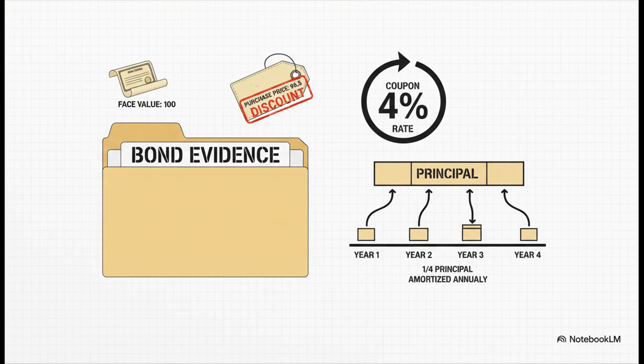Here's our evidence. The bond's face value is 100. That's what it's worth at the very end. But we're buying it for 96.5, so we're getting it at a discount. The coupon rate is 4%, and that's the interest it pays. But here's the real twist in the case. The principal, our initial investment, isn't paid back all at once. This is an amortizing bond, which means we get a chunk of our principal back every single year for four years. And trust me, that changes everything.